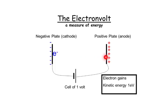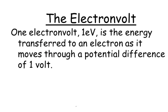If we had 20 volts here, it would gain 20 electron volts. If we had a million volts, it would gain a million electron volts. So an electron volt is just a unit of energy. This is the definition of the electron volt: one electron volt, one eV, is the energy transferred to an electron as it moves through a potential difference of one volt.